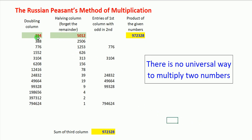With even larger numbers, the calculator gives 97238 and the method also gives 97238. To summarize: take two numbers, keep doubling one and halving the other, forgetting remainders. Continue until the halving column reaches 1. Then look at which entries in the halving column are odd, and write the corresponding entries from the doubling column. For example, 1253 is odd so 776 is written; 626 is even so nothing; 313 is odd so its corresponding value is written; similarly for other odd entries. Sum all selected values to get the product.